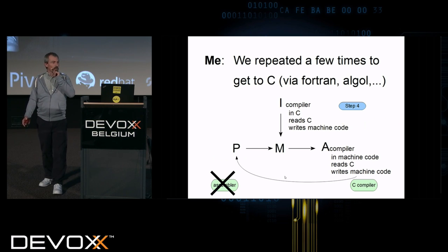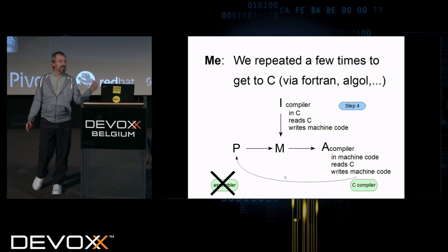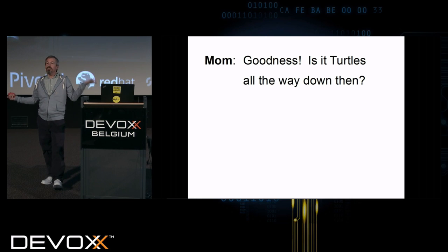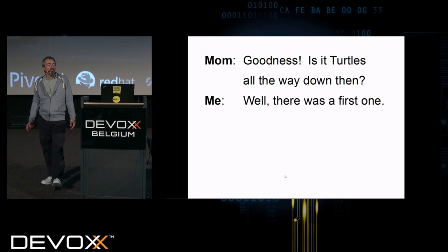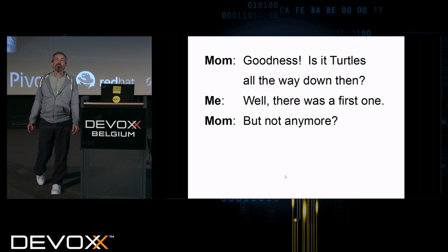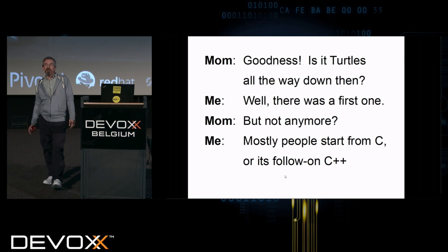So we're actually headed for this compiler here, which is in C and reads C. And it produces as output a compiler in machine code which reads C and writes machine code. And that is, goodness, is it turtles all the way down? Well, no, mom, it's not. There was the first one. But not anymore? Well, mostly people start from C or follow on C++.